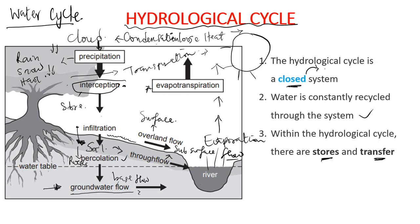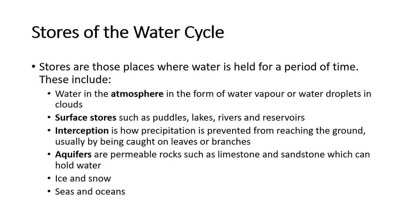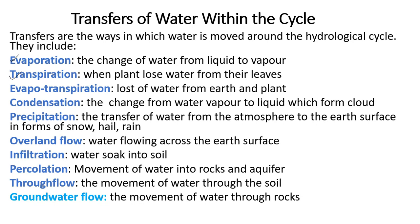All this water will eventually flow to a large water body and the evaporation process starts over again. Stores of water include the water table, interception, rivers, water vapor, clouds, lakes, reservoirs, groundwater aquifers, and ice and snow, seas and oceans. Transfers include evaporation, transpiration, evapotranspiration, condensation, precipitation, overland flow, infiltration, percolation, through flow, and groundwater flow.